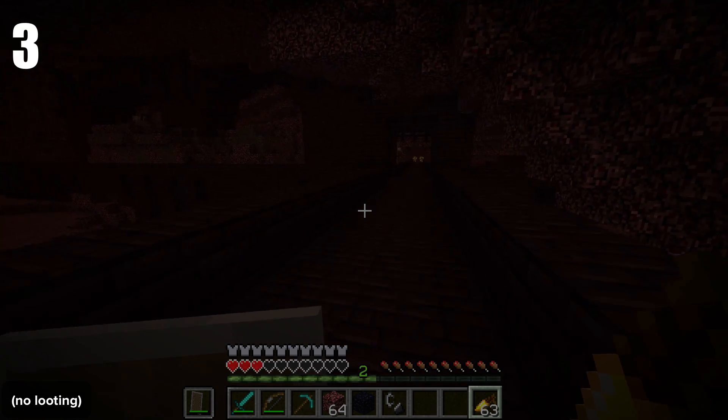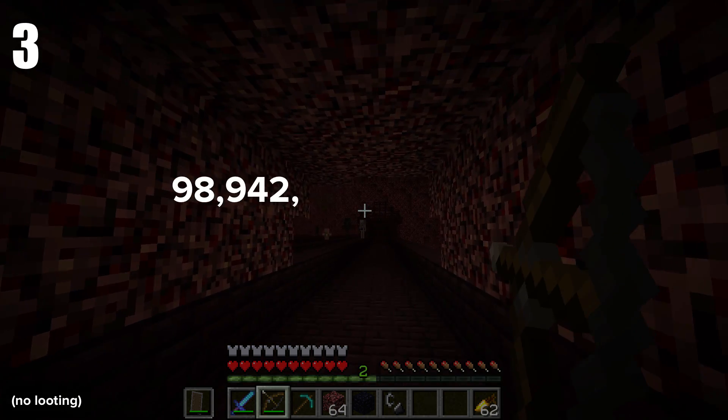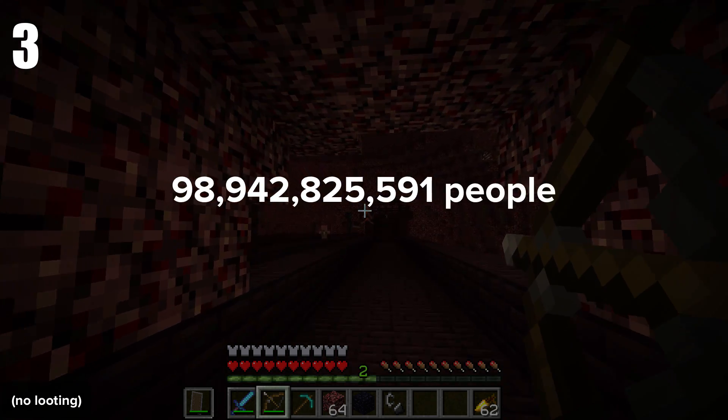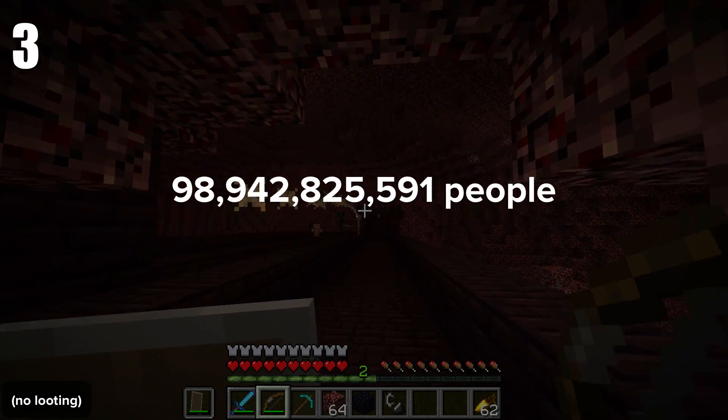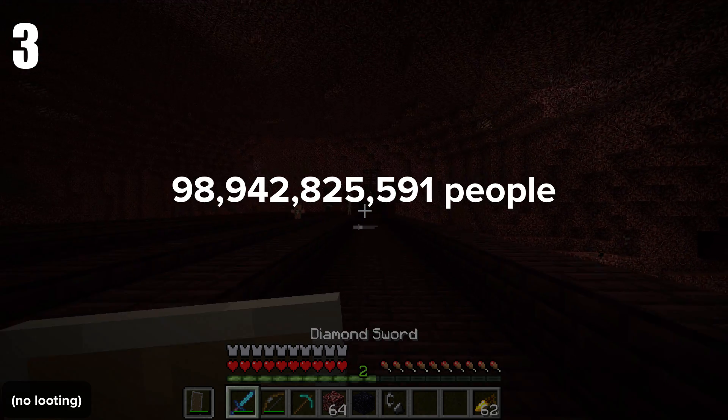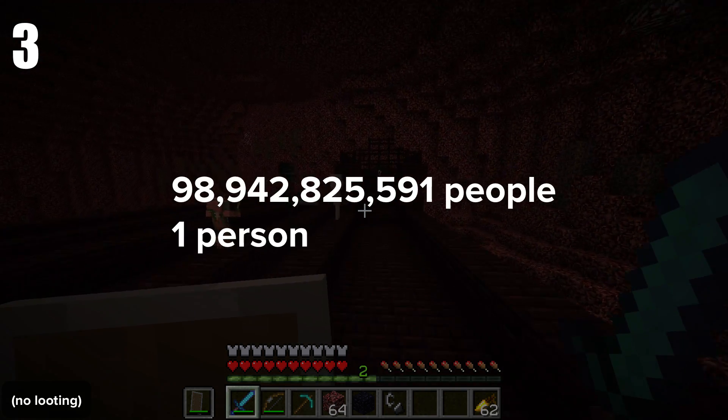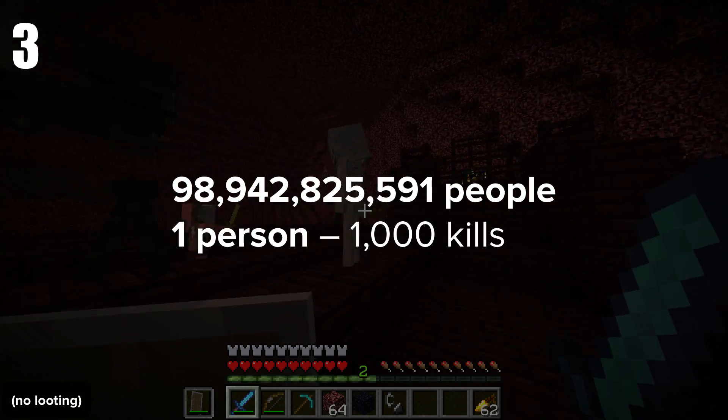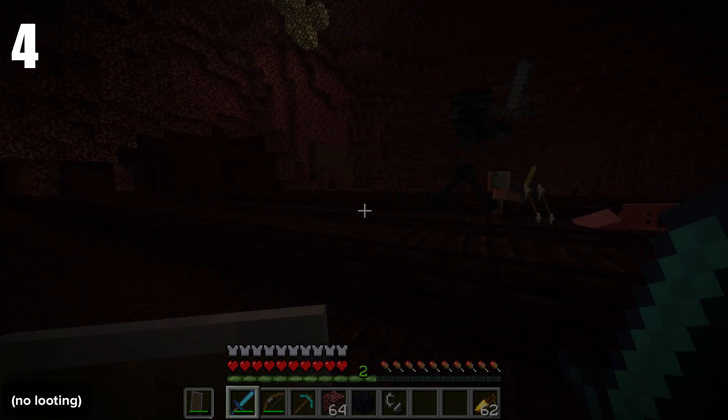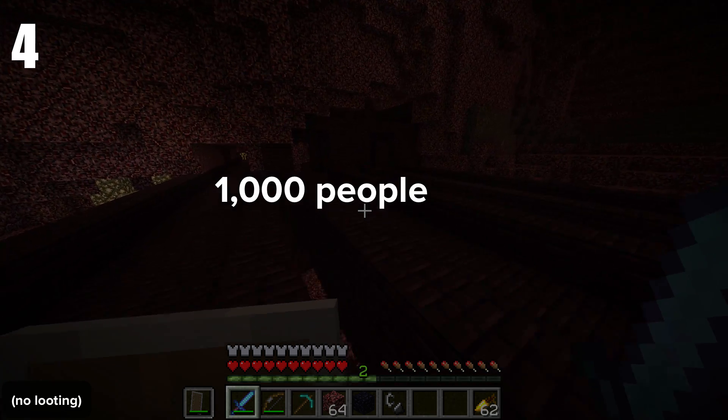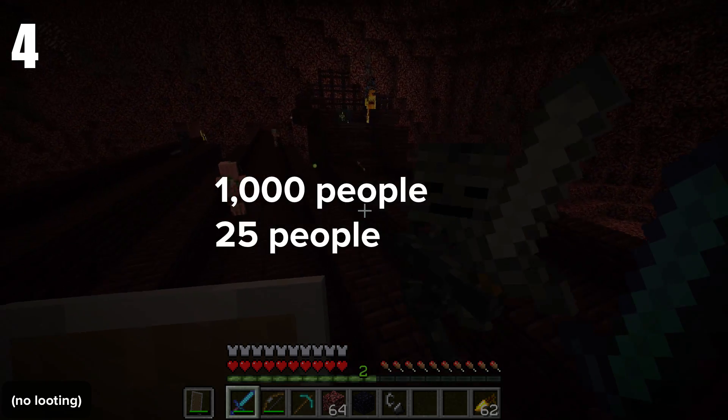Expanding upon that, if you put 98,942,825,591 people in a room, gave them computers and said, Hey, go kill some wither skeletons and get me a wither skeleton skull, it would take about one guy a thousand kills to get one. Poor guy. If you put a thousand people in a room and all told them to get a wither skeleton skull, about 25 people will get it on their first try.